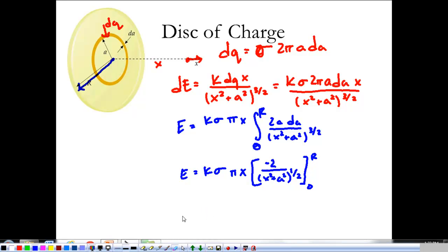So plugging in those limits, I'm just going to bring that 2 out. We've got 2K·σ·π·X. And if we end up at R, that's -1 over √(X² + R²) minus -1 over X to the 1/2. We don't have to worry about R there because it's 0.